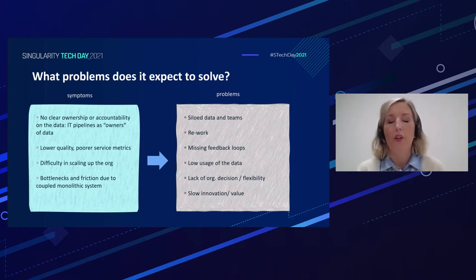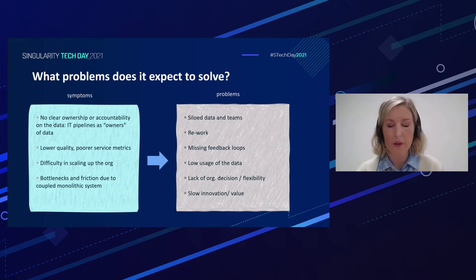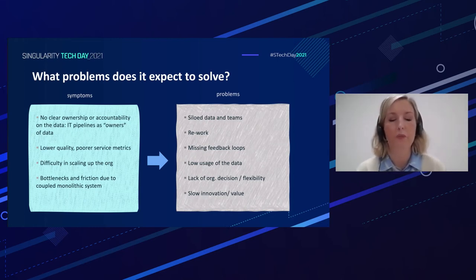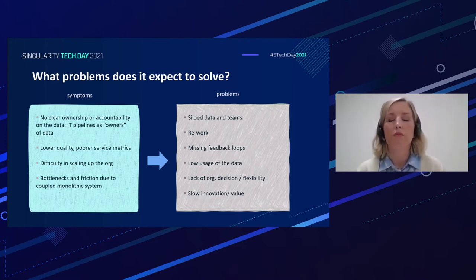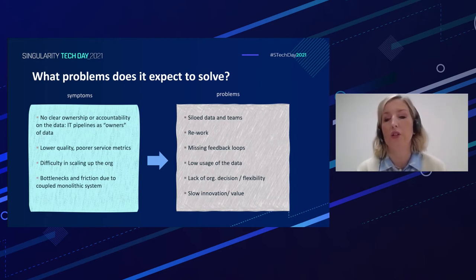Another typical symptom is the difficulty in scaling up the organization — because we have a central team of engineering experts that is very difficult to scale across the whole organization. And beyond the difficulty in scaling up, we can also see typical bottlenecks and friction due to monolithic systems. In the end, all these symptoms lead to rework, low usage of the data, and slow innovation or a slow capability to provide value.